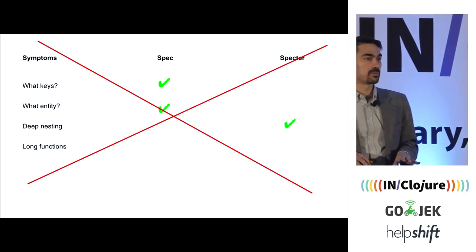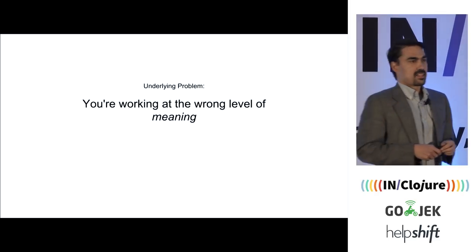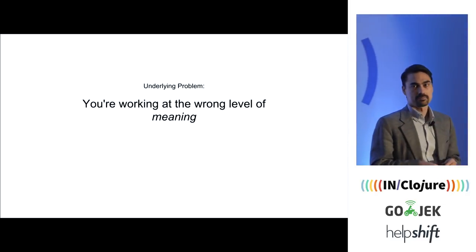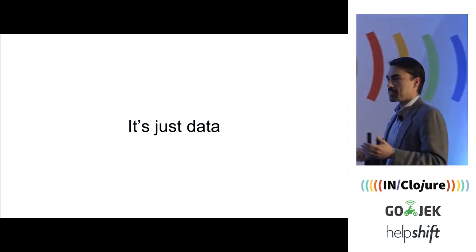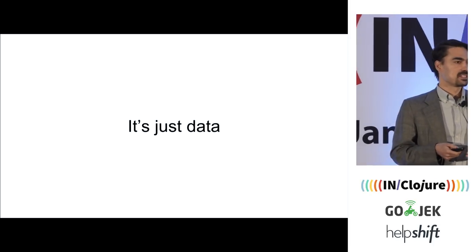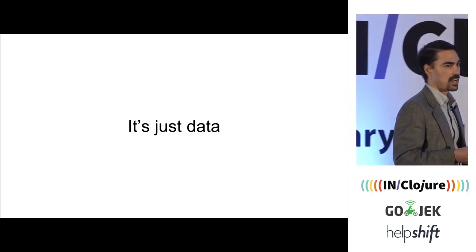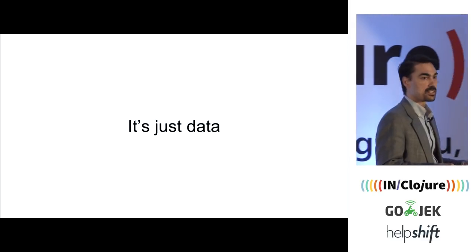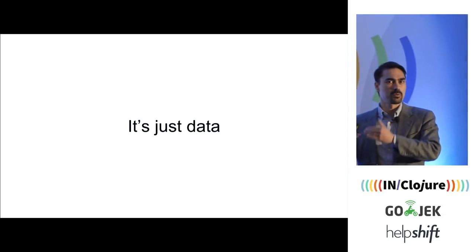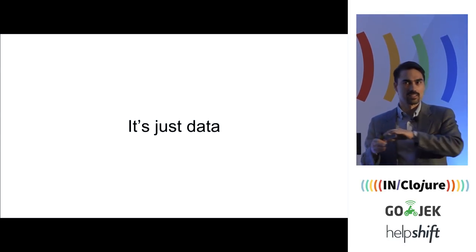I actually think it is a social problem or a design problem. The underlying cause of all these symptoms is that we're working at the wrong level of meaning. We have this expression — I heard it a few times yesterday here — "it's just data." It's one of the advantages of Clojure: you don't have to make all these classes and other kinds of abstractions just to start working. But I think that is misunderstood. It doesn't mean you don't come up with new levels of meaning.